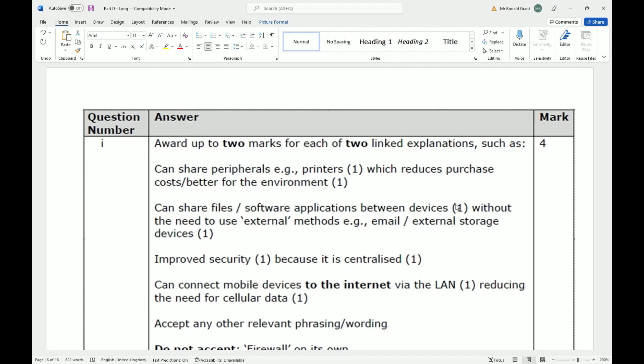Can connect mobile devices to the internet via the LAN, reducing the need for cellular data. When you get home, you typically jump onto your Wi-Fi and stop using your mobile data, which costs you a lot less. I only pay 10 pounds a month for my data because I don't need more. At work I have Wi-Fi most of the time, and at home I have Wi-Fi, so I don't need to pay for unlimited data.